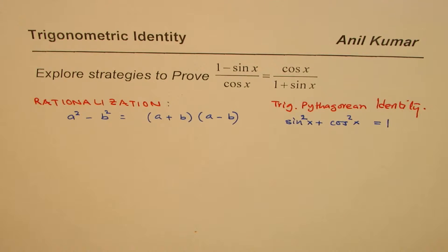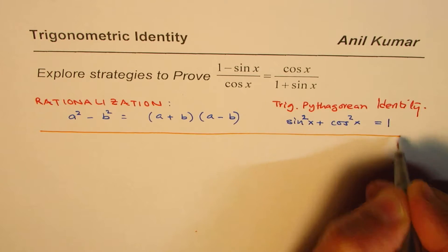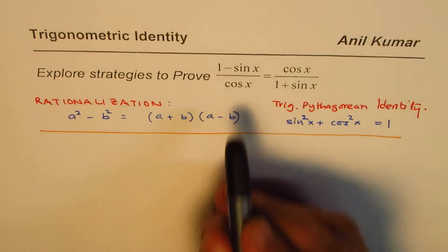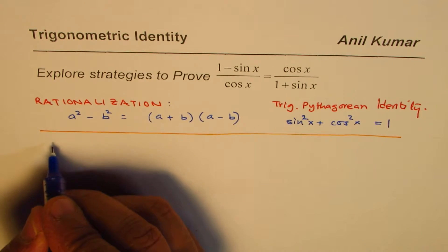So these two strategies will be applied in our proof for the given question. What we really have here is (1 - sin x)/cos x = cos x/(1 + sin x). So let's begin with the left side.